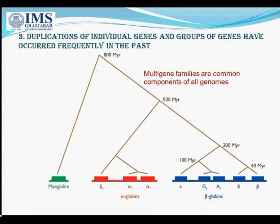Duplication of individual genes and groups of genes has occurred frequently in the past. As we can see in this diagram, it shows gene duplications during the evolution of the human globin gene families. Comparison of their nucleotide sequences enables the evolutionary relationships between the globin genes to be deduced using molecular phylogenetics techniques. The initial split was between an ancestral gene that gave rise in one lineage to the modern gene for the muscle oxygen-binding protein myoglobin, and in the other lineage to the globin genes. This duplication is estimated to have occurred approximately 800 million years ago.